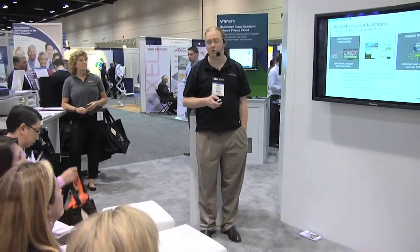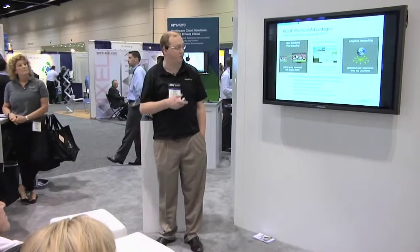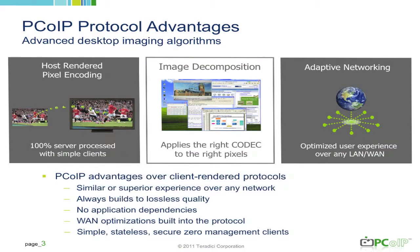There are a number of technology applications and advantages with the protocol, including host rendering, image decomposition, and adaptive networking. On the host rendering side, all the display pixels are rendered in the server, and this is the way applications expect them to be, so it maintains application interoperability. For image decomposition, we determine the right compression technology to use with the right pixels. Networking is an inconsistent resource, so being able to adapt to the available resources will allow exceptional user experience over any network.